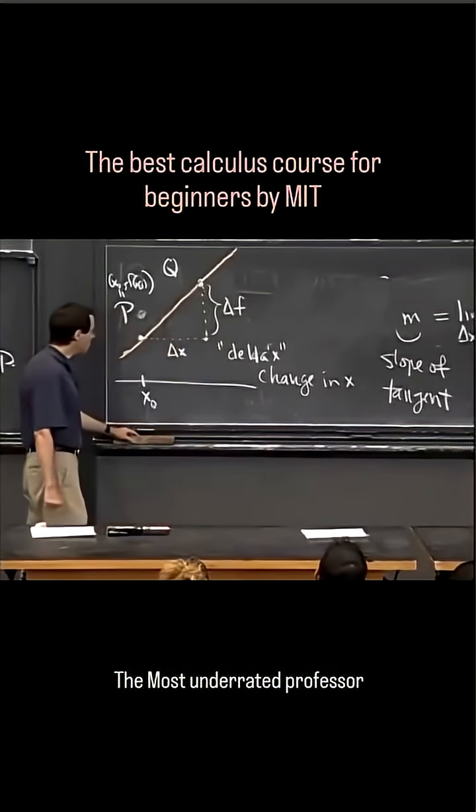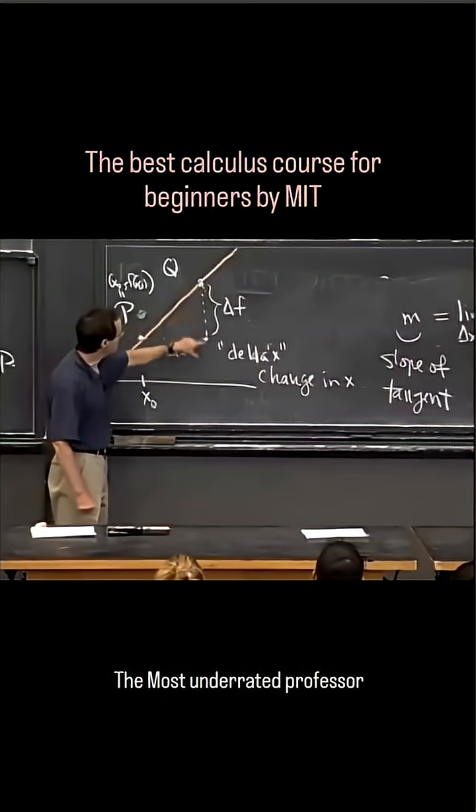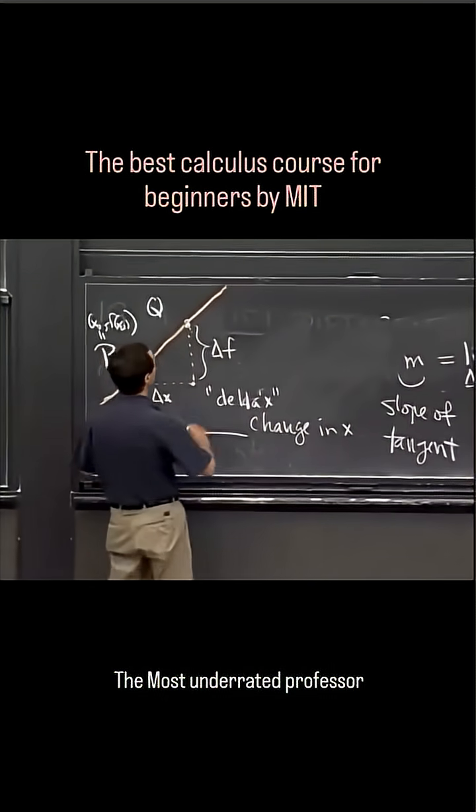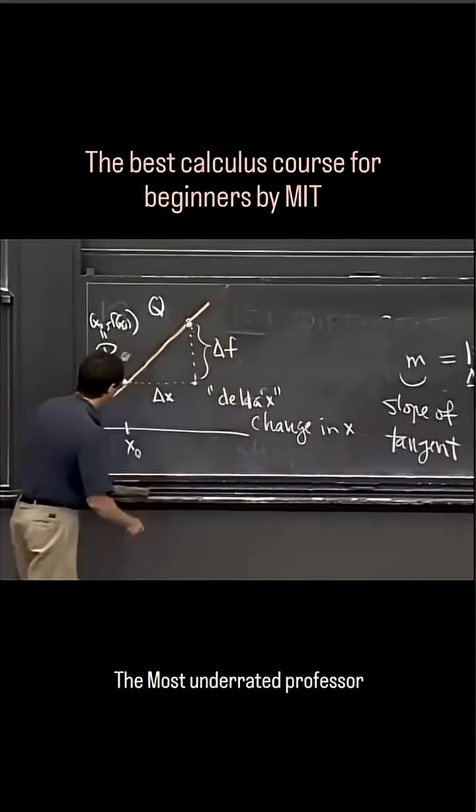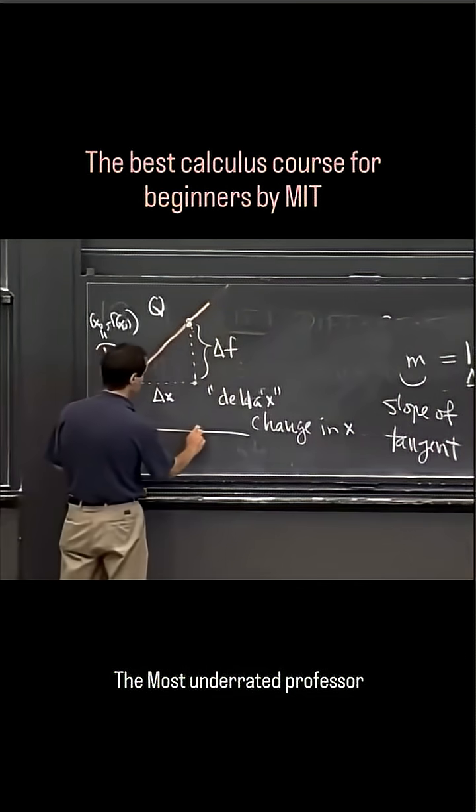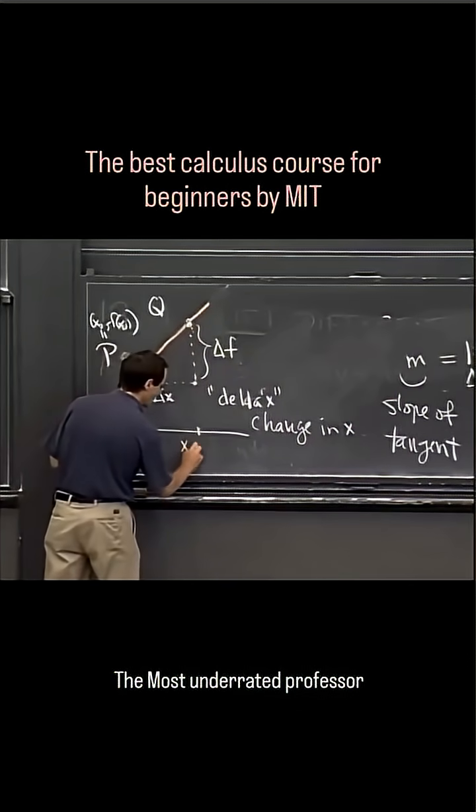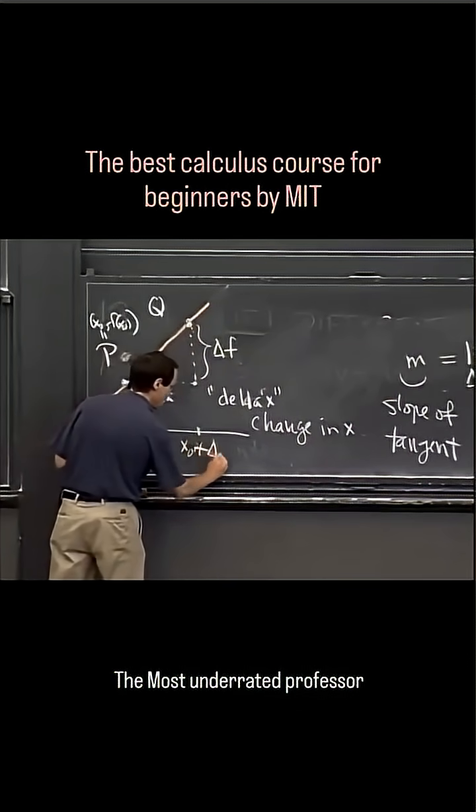And in order to compute these distances, and in particular, the vertical distance here, I'm going to have to get a formula for q as well. So if this horizontal distance is delta x, then this location is x0 plus delta x.